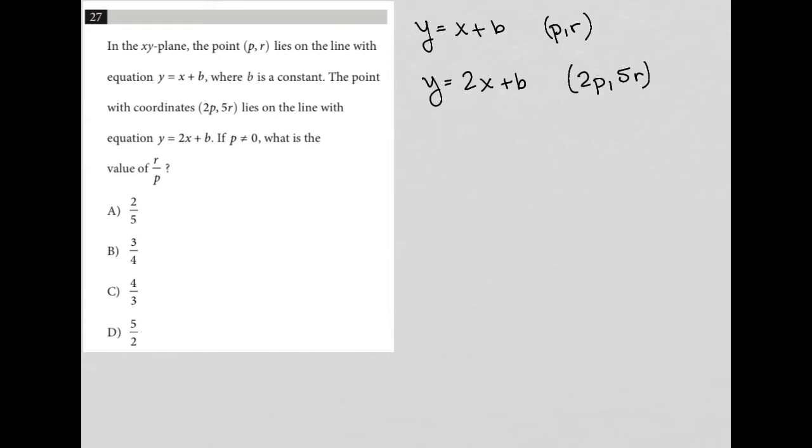If p does not equal 0, what is the value of r over p? All right, so we take all that and we want to find r over p. That's the question. So here's the information. This is the actual question. So how do we put all this together?